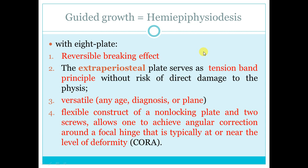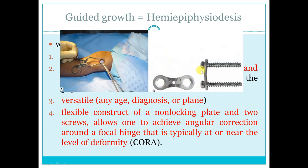Guided growth is the modern technique. This is the 8-plate — flexible, non-locked — done with a mini incision. It is applied extra-periosteally to avoid injury to the physis, and it is placed near the center of rotation of the deformity to avoid translation, as covered in the deformity correction lecture. This plate is versatile and can be used at any age, provided that there is remaining growth to correct the deformity.